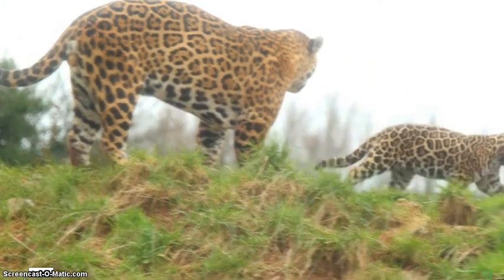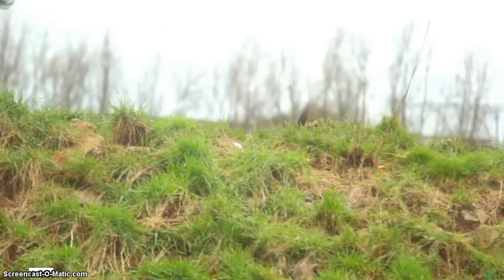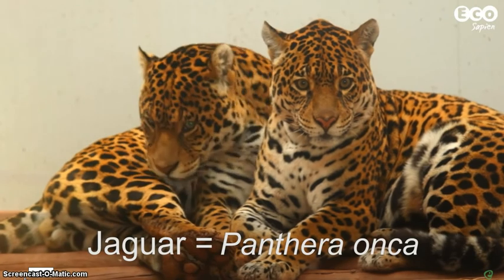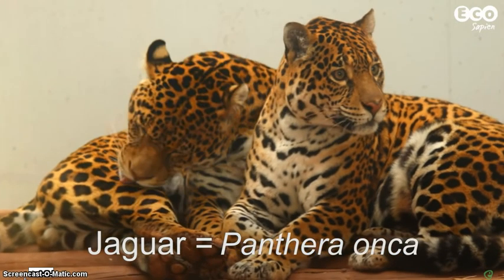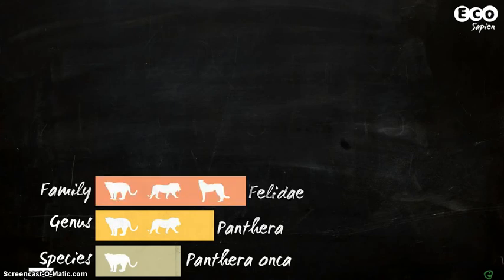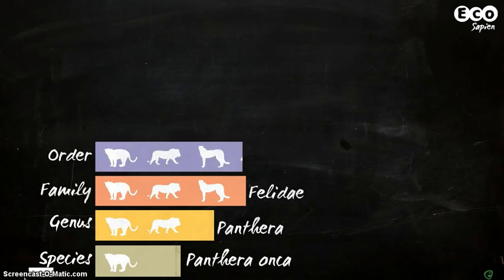Let's look at a more familiar example — a fellow mammal, the jaguar. Its Latin binomial name is Panthera onca. The genus, Panthera, is shared by other big cats like the lion, leopard, and tiger. Big cats are part of the cat family, Felidae. And Felidae is part of the order Carnivora, which includes creatures like dogs, seals, and bears.